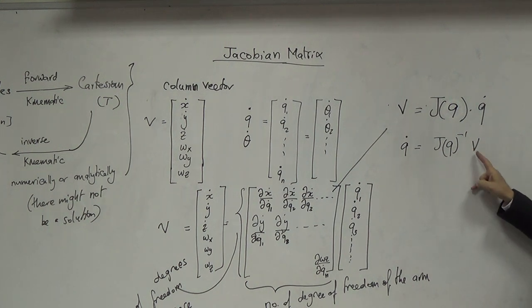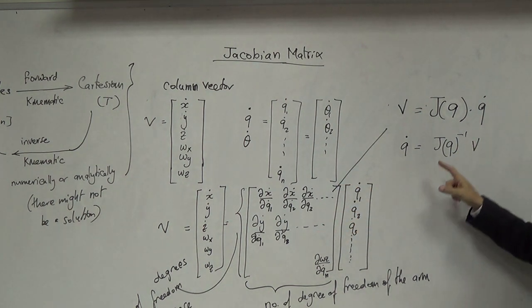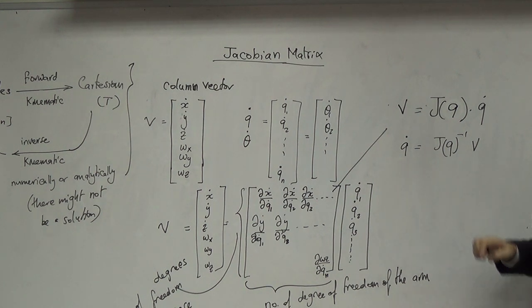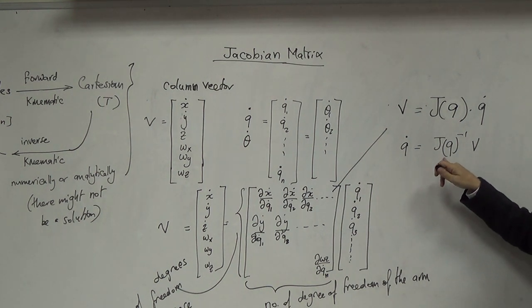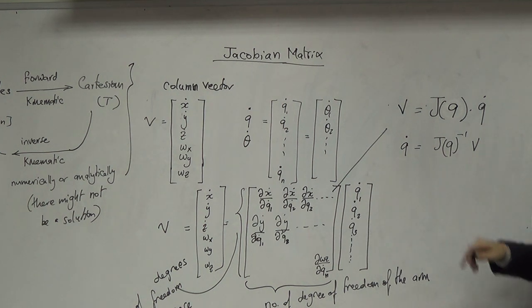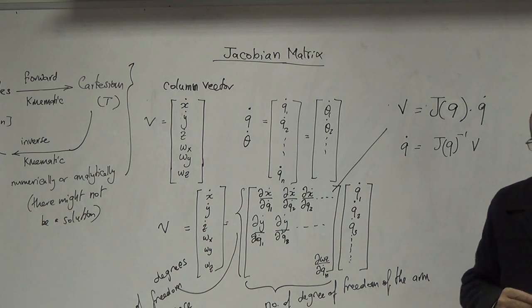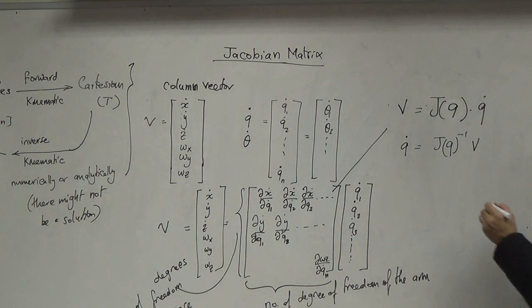إنه إذا كان عندي بدي أحقق سرعة معينة بالفضاء بـ x, y, z و omega x و omega y و omega z، إيش هي سرعة الـ joints اللي لازم أحققها؟ طبعا حتى لو كانت ممكن ما يطلعش عندي inverse، تكون singular.